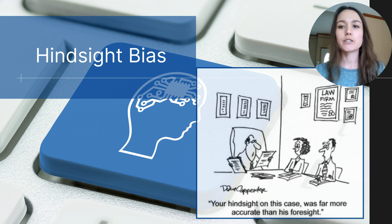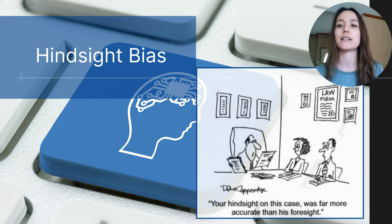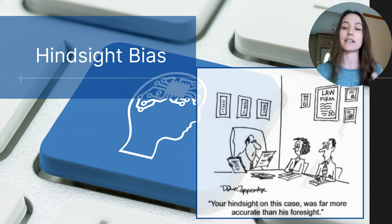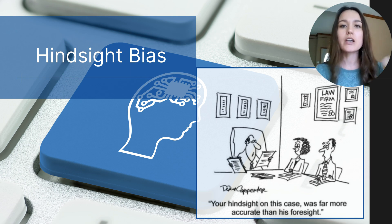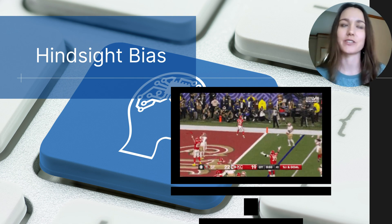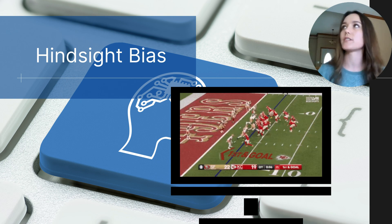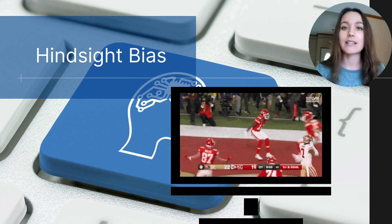Over the next few slides I'll go over four reasons why we cannot rely on our own intuition and must rely on research. The first reason is the hindsight bias, often thought of as the 'I knew it all along' principle. We have the tendency to believe, after learning about an outcome, that we could have known it all along. Think about after a Super Bowl — everyone knows that team was going to win, of course that play was going to end that way.